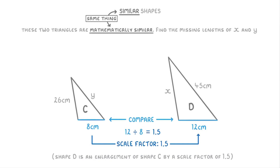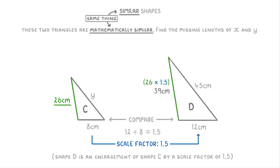Now that we know the scale factor we can start to work out the missing sides. To find the length of x, we just look at the equivalent side on the smaller shape, which is this 26 centimeter one, and then multiply 26 centimeters by 1.5 to find that x must be 39 centimeters long.